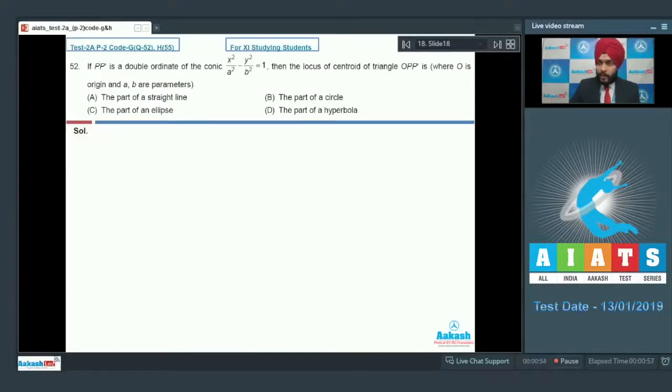Starting with the questions which have only one option as the correct answers, question number 52 says that if PP' is the double ordinate of the conic x squared by a squared minus y squared by b squared equals 1, then the locus of the centroid of the triangle OPP' is where O is origin, and A and B are parameters.